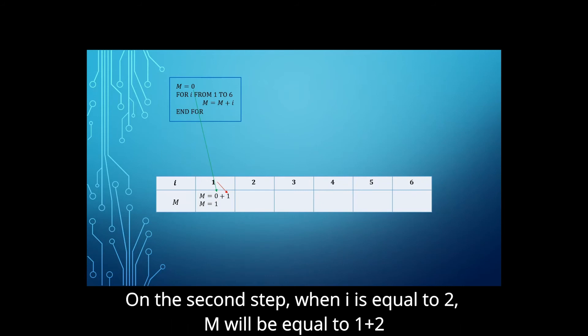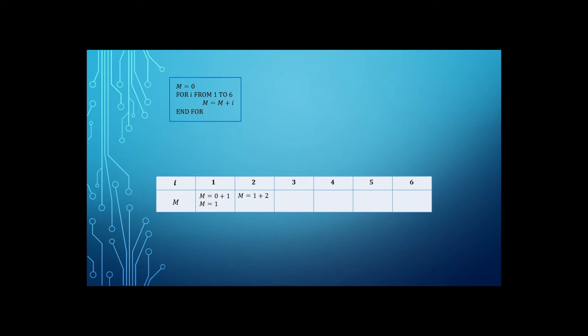On the second step, when i is equal to 2, m will be equal to 1 plus 2 because m is equal to 1 and i is equal to 2. So at the end of this step, m is equal to 3.